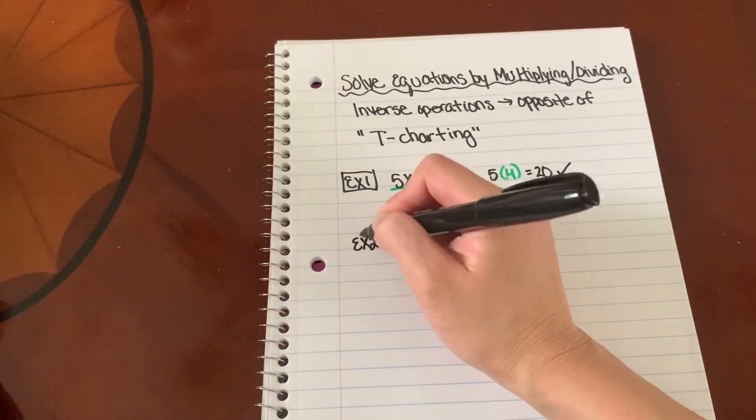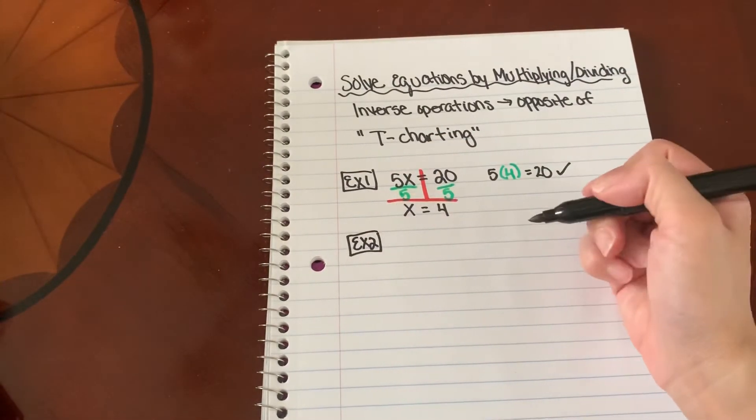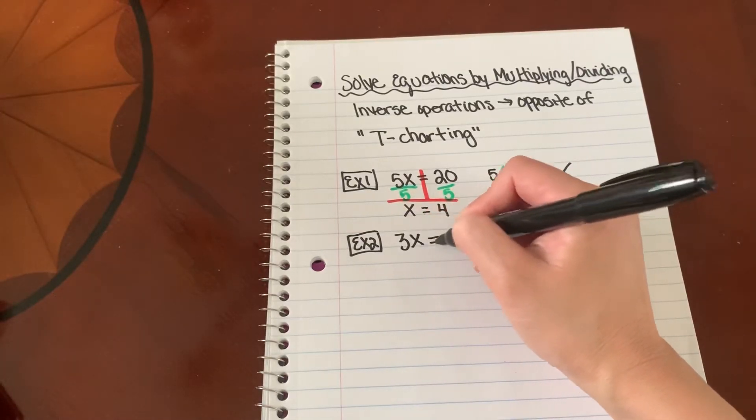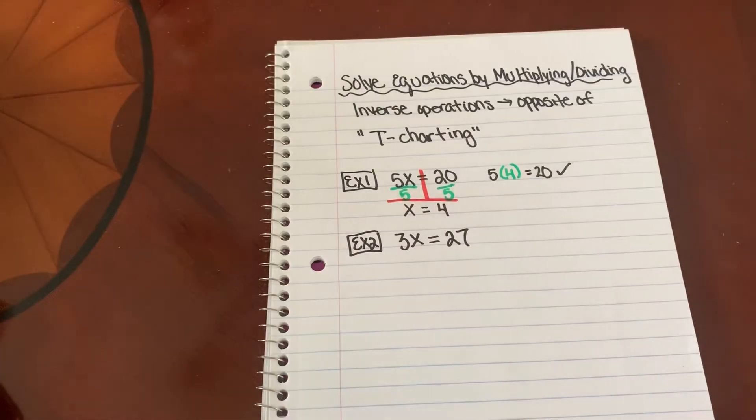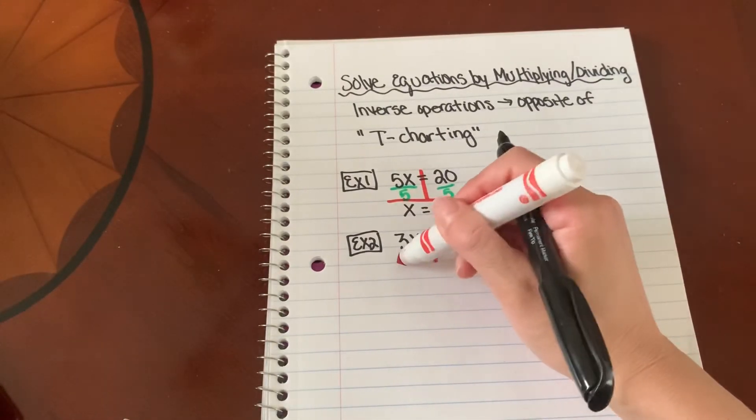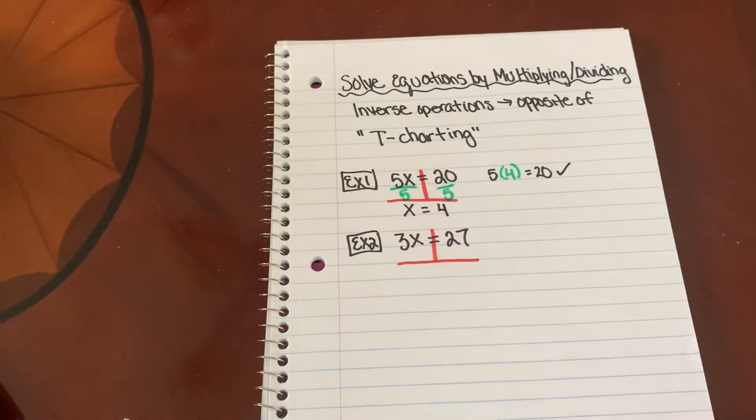Let's try another one. Example 2. 3x equals 27. So again, I'm going to draw a line through my equal sign and make my upside down T.